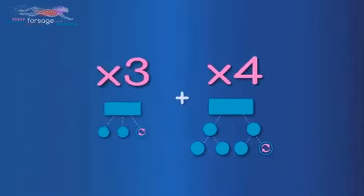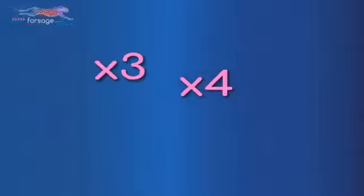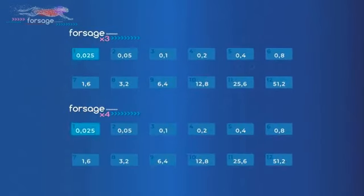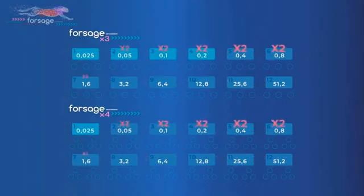Upon registration on Forsage, you have two programs open to you simultaneously—each of these slots X3 and X4. We have 12 slots. There are all identical and work in an identical similar way. Each of the slots is twice as expensive as the previous, and therefore the income and profit from them is twice as higher as well. All active slots move and bring you income simultaneously.